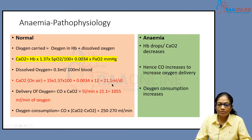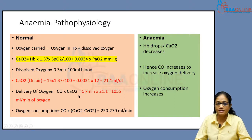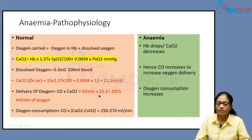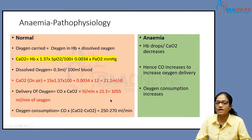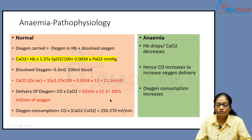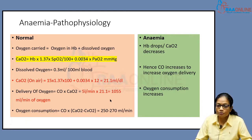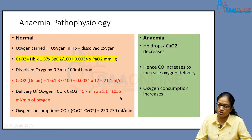We are looking at 21.1 ml carried by the hemoglobin, and the delivery would be cardiac output into this content — which is 5 liters per minute into 21.1 — giving about 1055 ml per minute of oxygen being delivered to the tissues. This is in a human being who has 15 grams of hemoglobin, breathing air with normal oxygen capacity and good cardiac output.